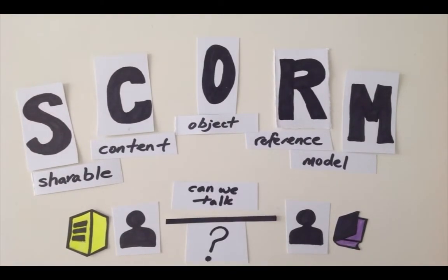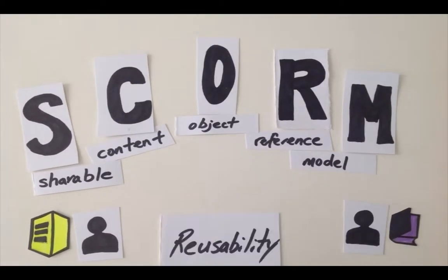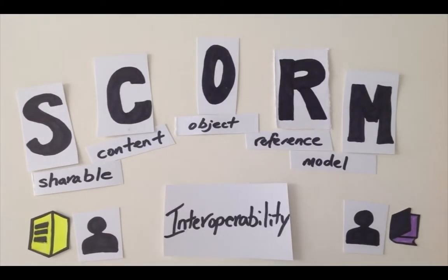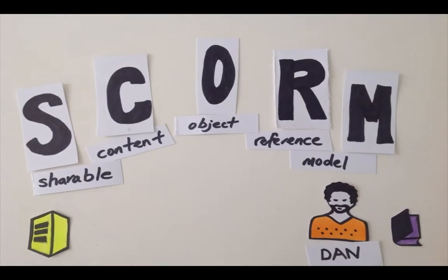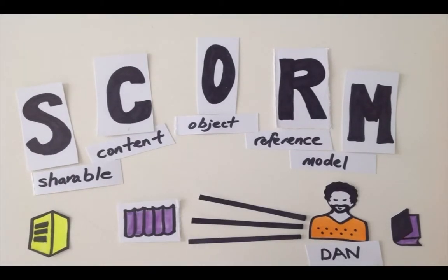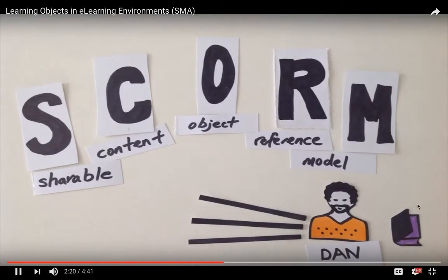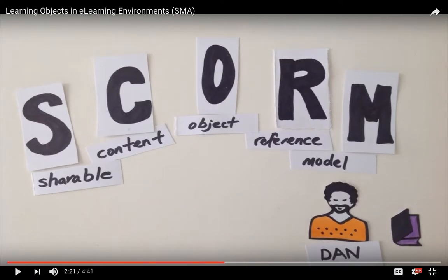The industry standardization of SCORM, along with its key characteristics of usability, interoperability, accessibility, and durability, enables Dan to make one course for occupational health and safety and then with very little effort create multiple versions for different sectors. We can also see Mayer's principles already included in this video, such as the coherence principle, the spatial contiguity principle, the segmenting principle, and the voice and image principle.